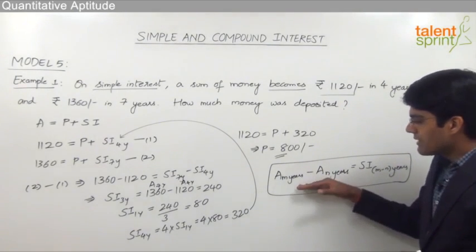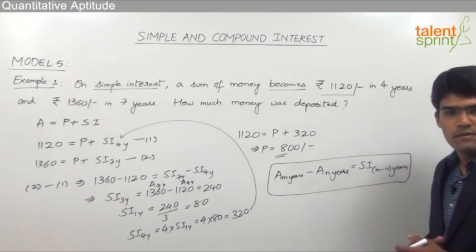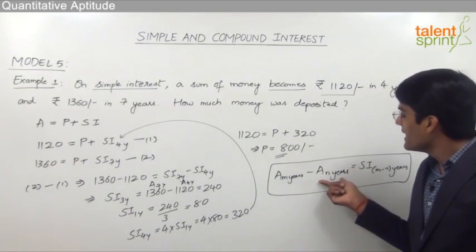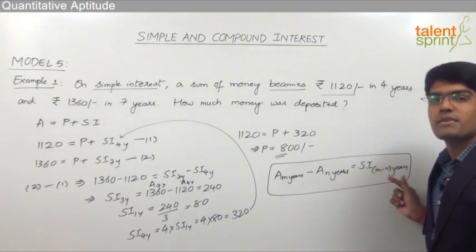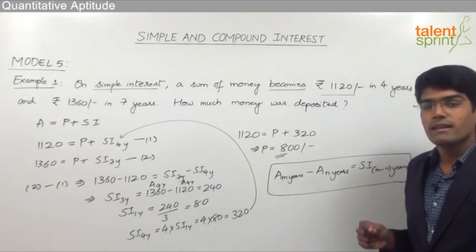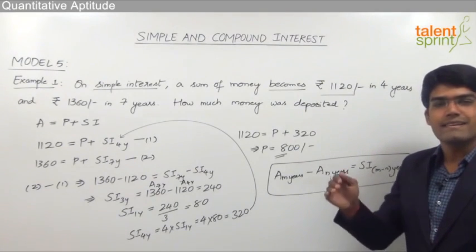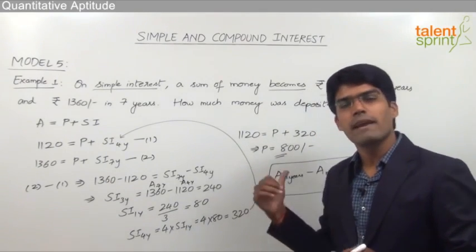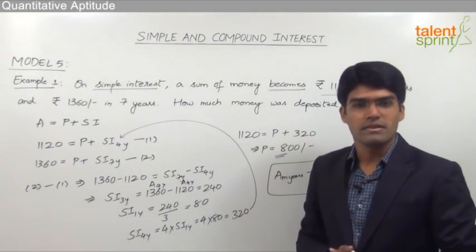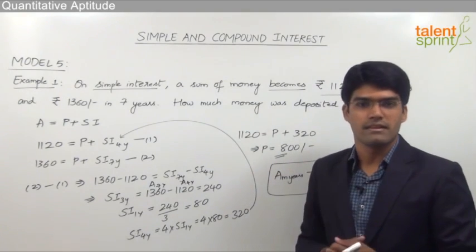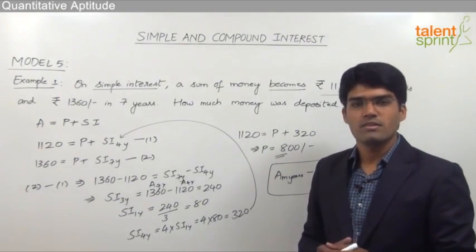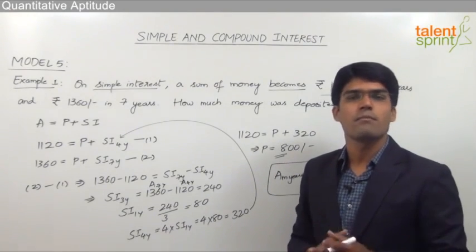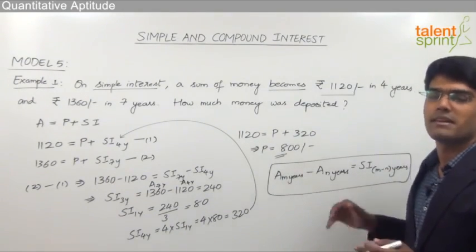Remember, this particular point is applicable only in the case of simple interest. We cannot say that total amount for m years minus total amount for n years equals compound interest for (m minus n) years. In simple interest, the interest remains constant every year, so we can directly take the difference of the two amounts. But in compound interest, the interest increases every year, so this point is not applicable for compound interest.